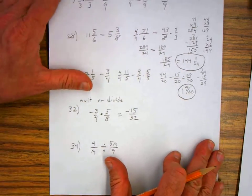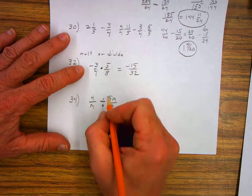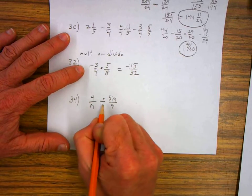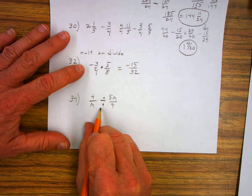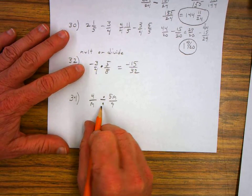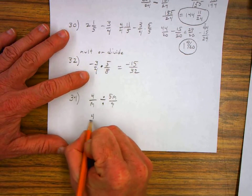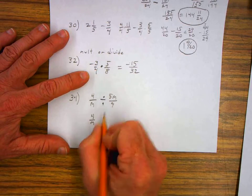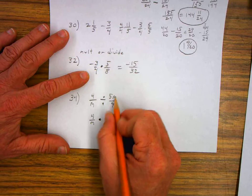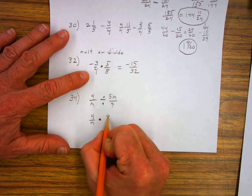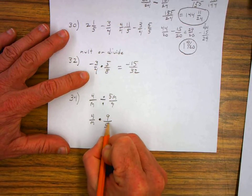On number thirty-four, it says four over M divided by five M over nine. So we're going to convert this from a division problem to a multiplication. So we write four over M. We change the division sign to a multiplication sign. And we take the reciprocal of this fraction and rewrite it. So I have nine over five M.